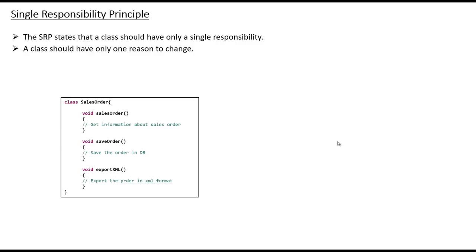Let me give you an example where I can show how code violates the Single Responsibility Principle. Suppose I have a SalesOrder class where I have a method that gives me the sales order for a particular month, a method that saves the order into a database, and a method that exports the sales order to XML format for a given month. You can see that this class has three methods, all performing different actions.